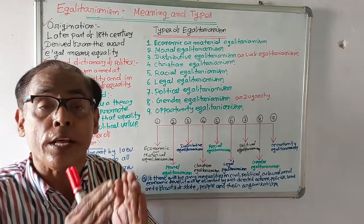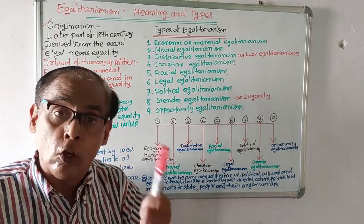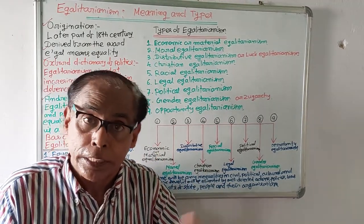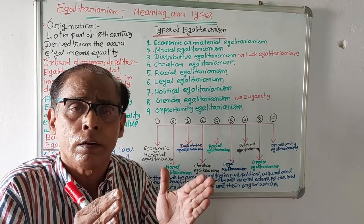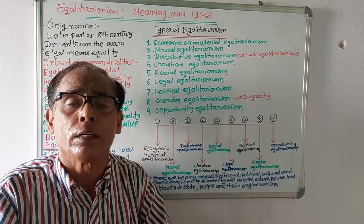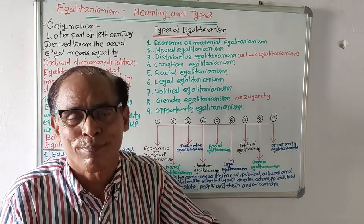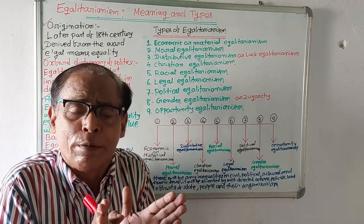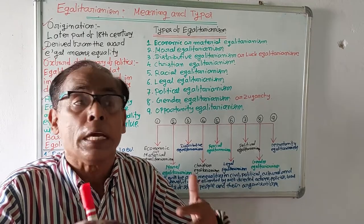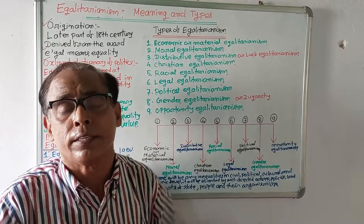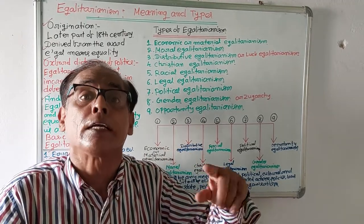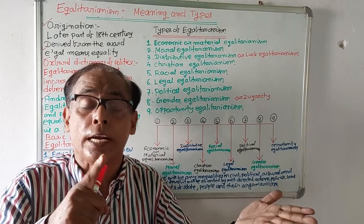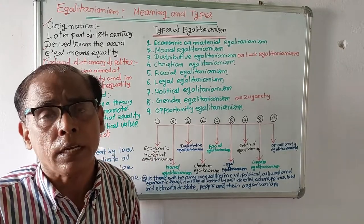Economic egalitarianism is otherwise known as material egalitarianism. Economic or material egalitarianism means all the people will be given freedom to perform any work to earn their livelihood — food, clothing, and shelter. Nobody will be forced to carry on a particular work. People will be given full freedom to perform any type of legal work to earn their livelihood.